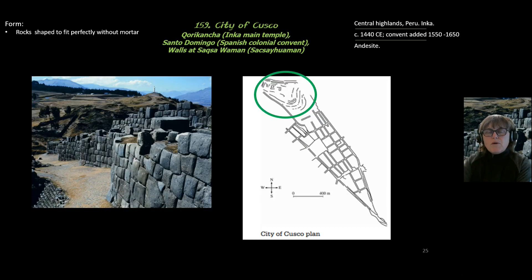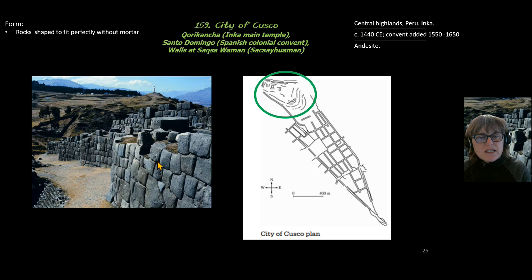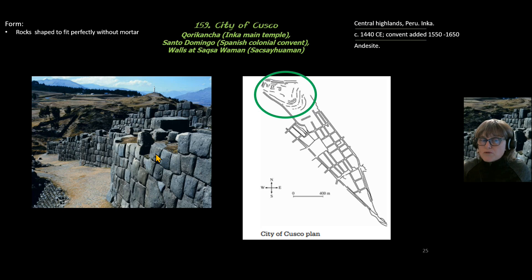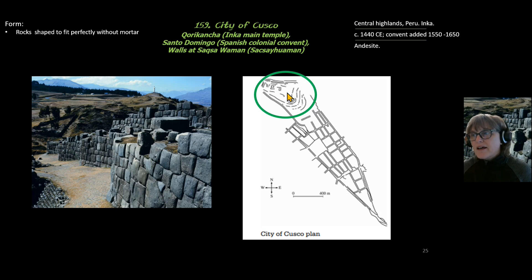The third piece, the walls at Sasquawaman, in terms of form are the same as the Coricancha — stones placed together perfectly without mortar. You can see these little indents coming out; those are little handholds. The process has been left for us to see, because these handholds or rope holds would have had rope go around them to move the stones up into place. They weren't carved or shaved off. In terms of form, these walls at Sasquawaman are located at the head of the puma.